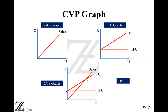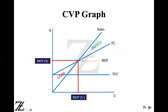Looking at the total fixed cost and total cost on the graph — where the total sales line meets the total cost line, that point is known as the break-even point. This is the point where the company's profitability is zero — you are neither losing money nor making money. On the horizontal axis, the break-even point gives you break-even in units. On the y-axis, it gives you a dollar figure — break-even point in dollars.